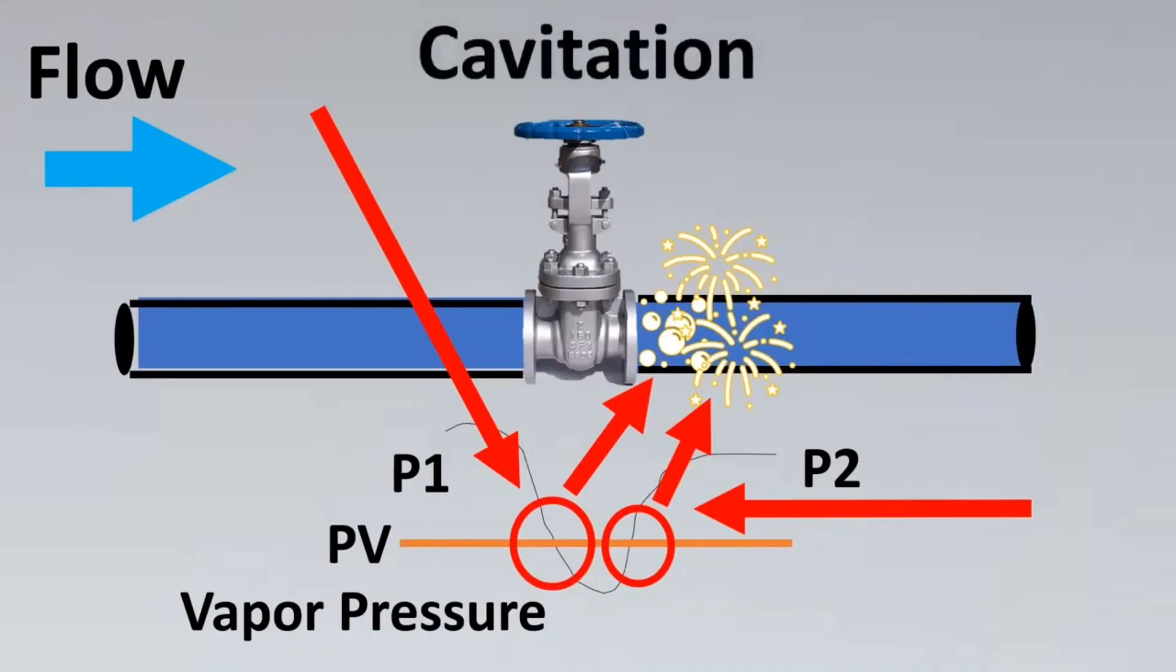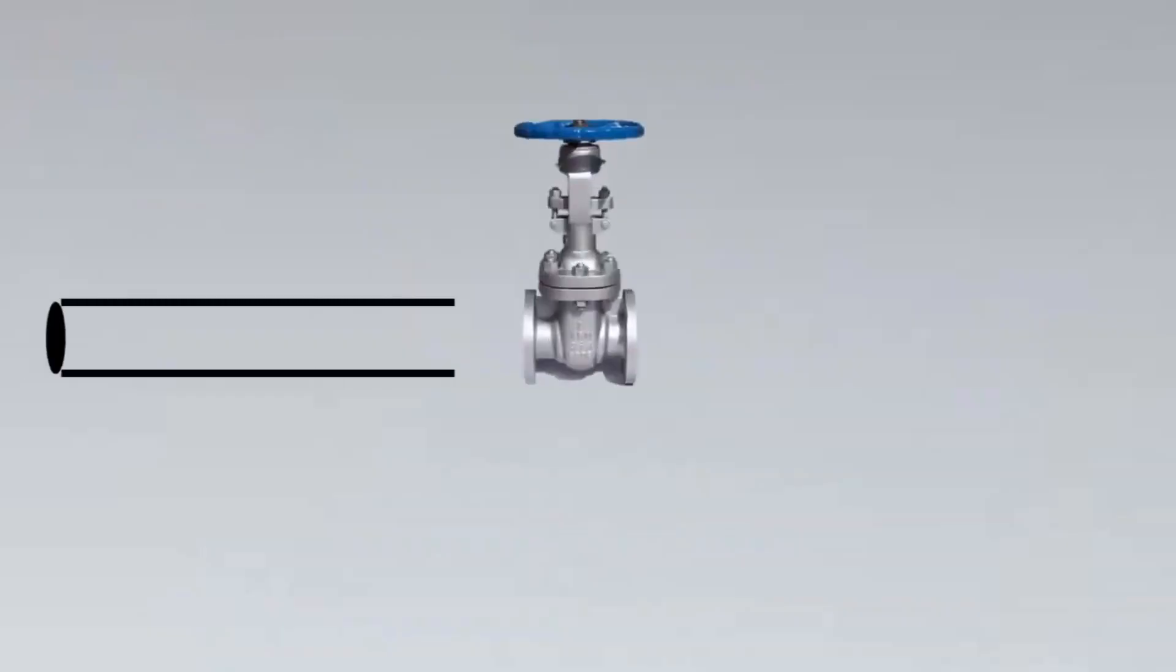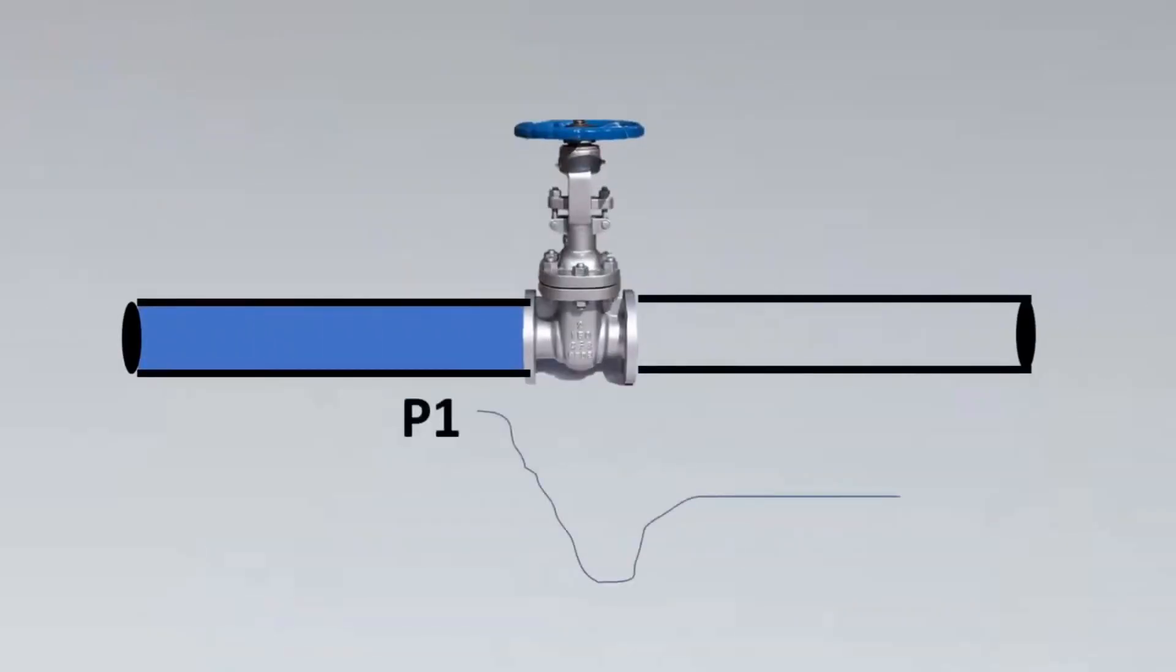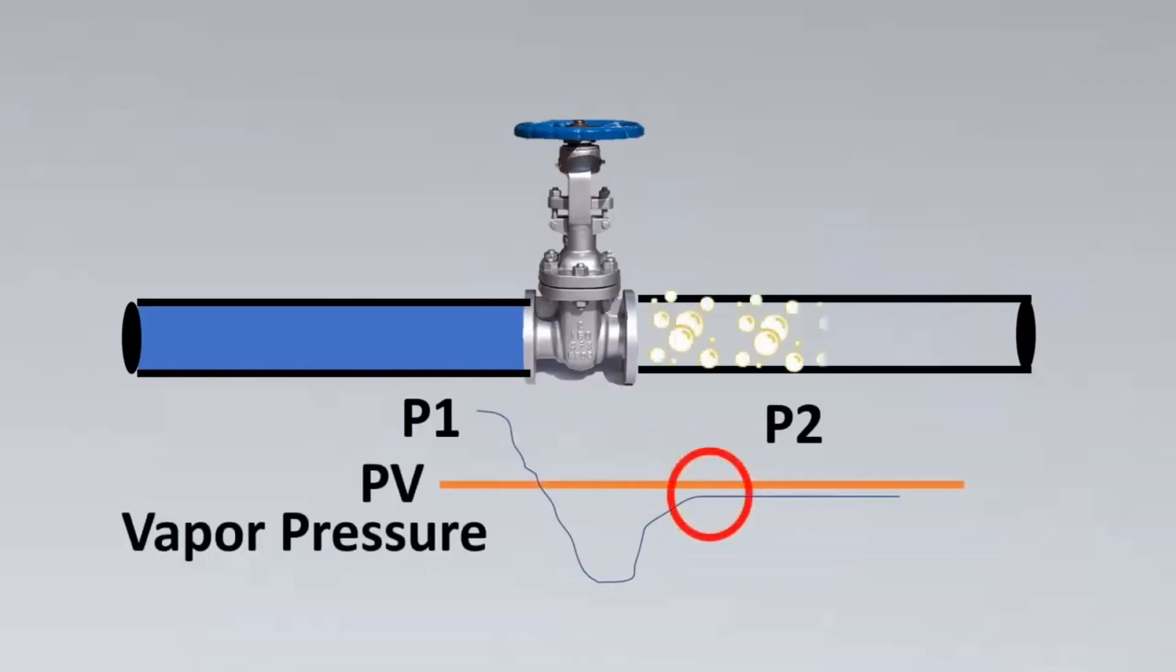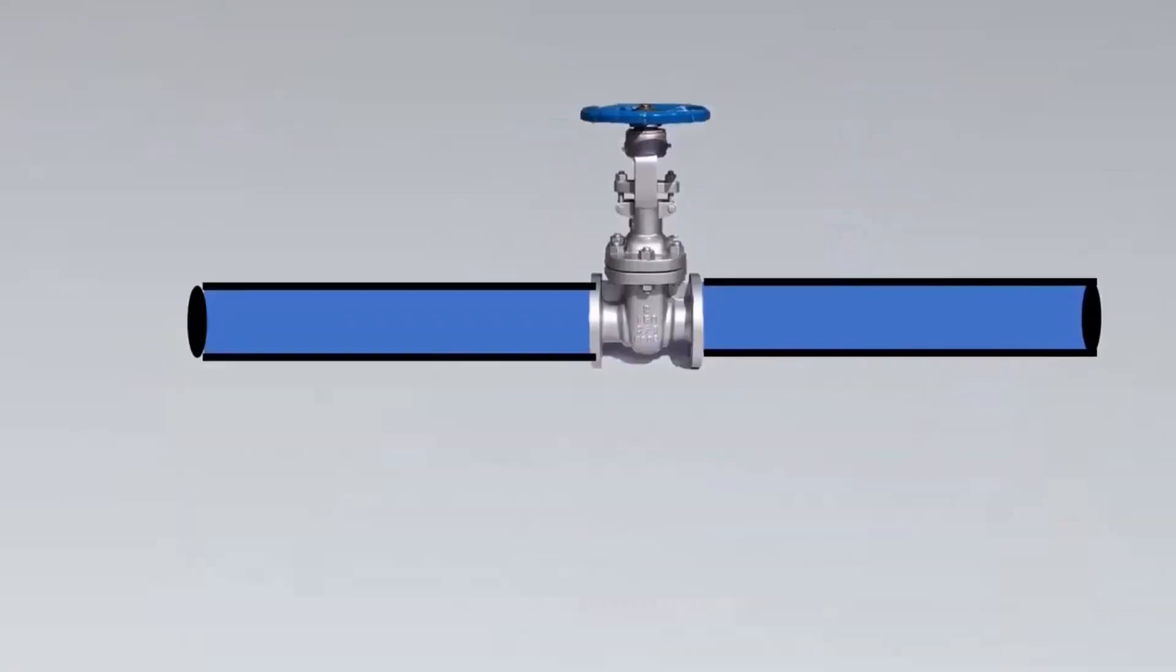The next case is when there is flow to the valve, but the pressure downstream does not recover. This happens when the pressure downstream is still below the vapor pressure curve. This makes the liquid still stay in the vapor pressure phase in the downstream, and this phenomenon is called flashing.